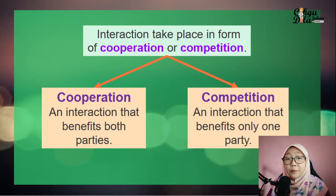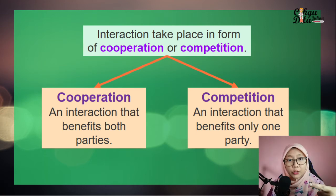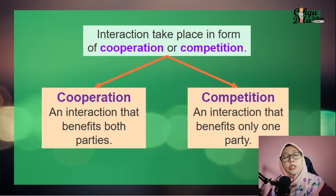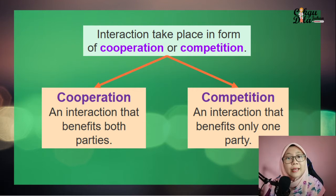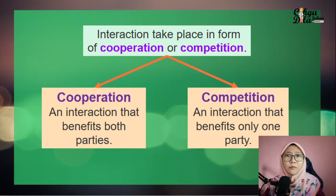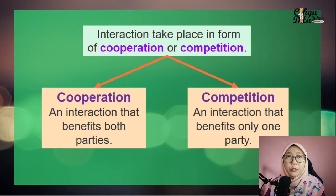Interactions can take place in the form of co-operations and competitions. Co-operation is an interaction that benefits both parties — both get benefit. Meanwhile, competition is an interaction that benefits only one party, so one gets benefit and one may get harmed.